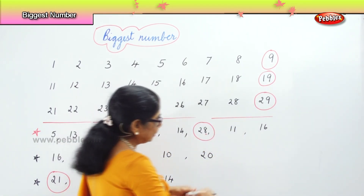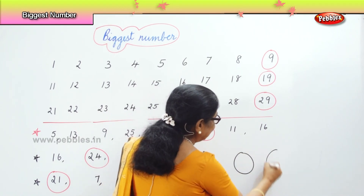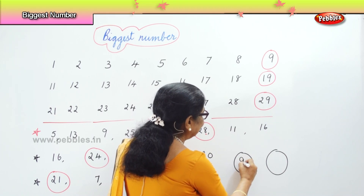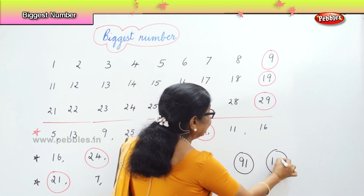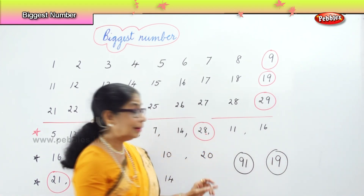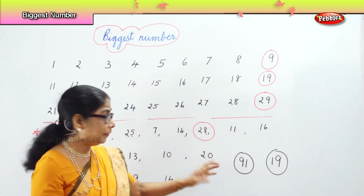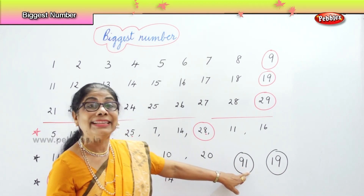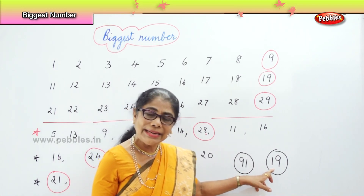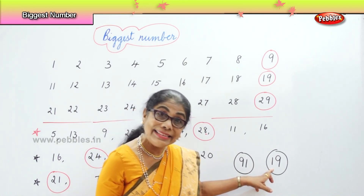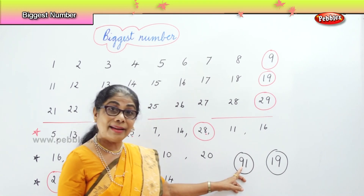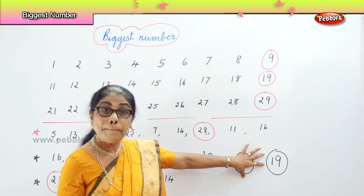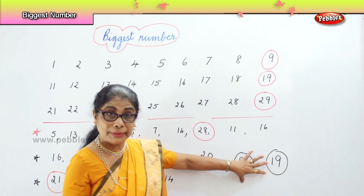If I say: identify which is the bigger number — ninety-one and nineteen. There is one and nine, one and nine. In the first place we have nine and one. Ninety-one — nine and one. Nineteen — one and nine. The first number here is nine, the first number here is one. So ninety-one is the biggest of the two numbers.